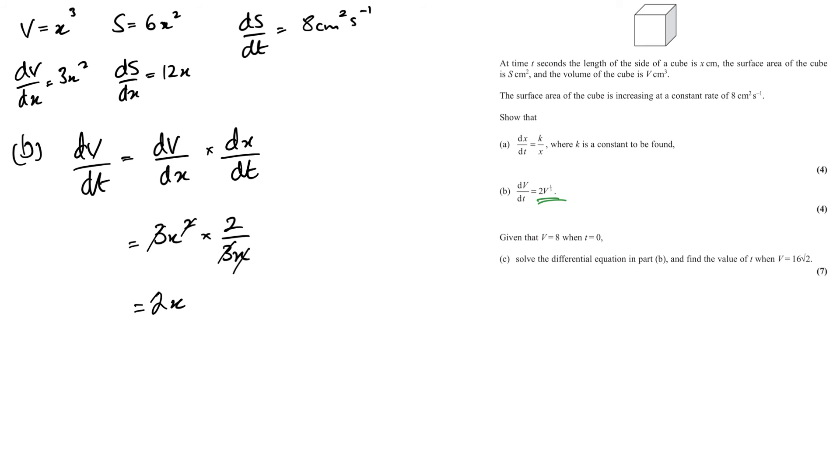We want it in terms of V, so let's take the V. V equals X cubed, so X equals V to the power 1 third, or the cube root of V, and then substitute that in. That then gives me 2V to the 1 third, which is exactly what we needed.